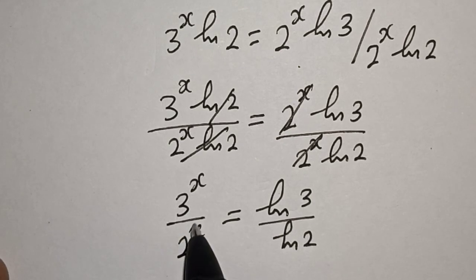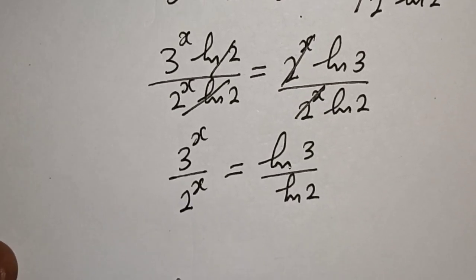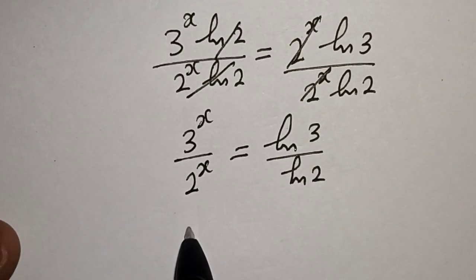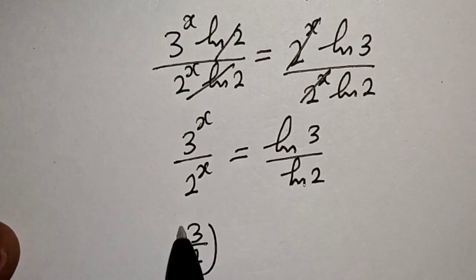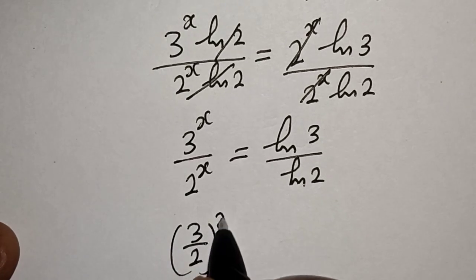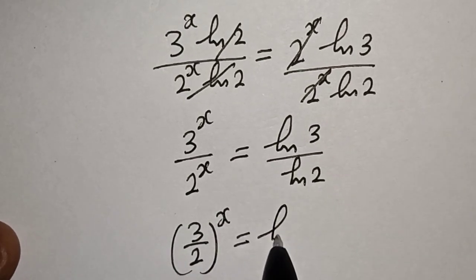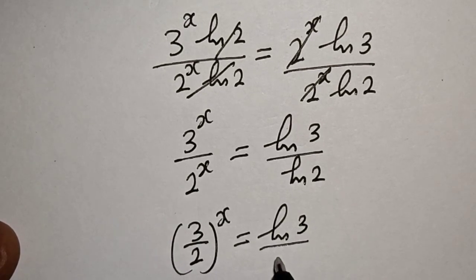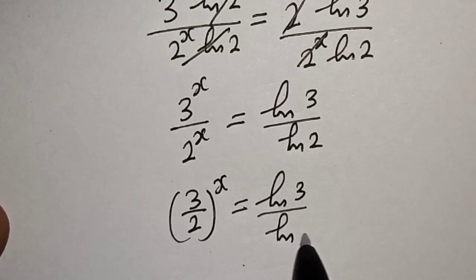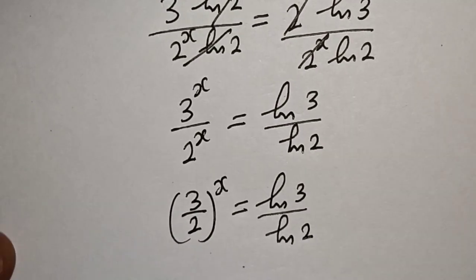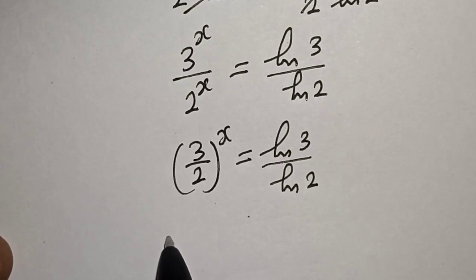If you look at this very well, they have the same power. We have 3 raised to power s over 2 raised to power s equal to natural log 3 over natural log 2. Then let's take the natural log again.